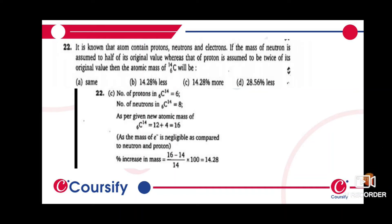Next, it is known that atoms contain protons, neutrons, and electrons. If the mass of the neutron is assumed to be half of its original value, whereas the proton is assumed to be twice of its original value, then the atomic mass of carbon-14 would be...